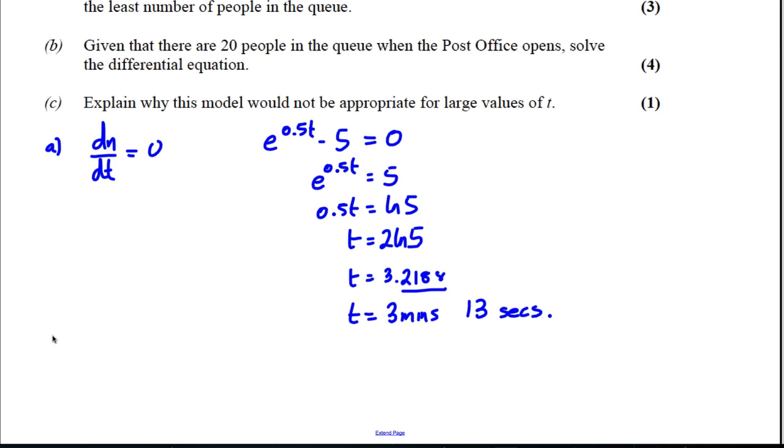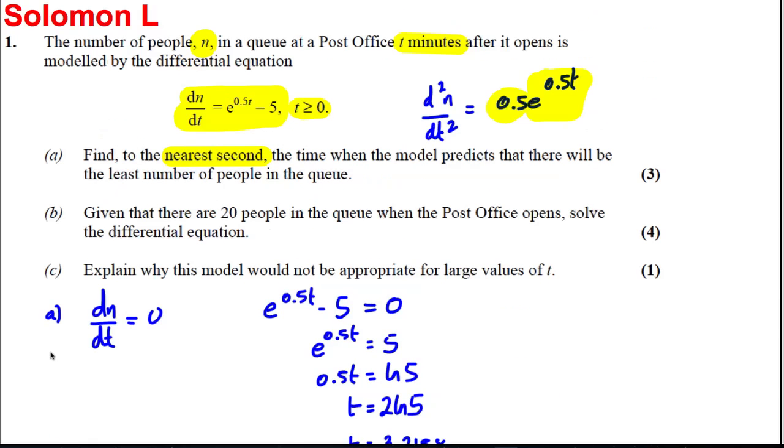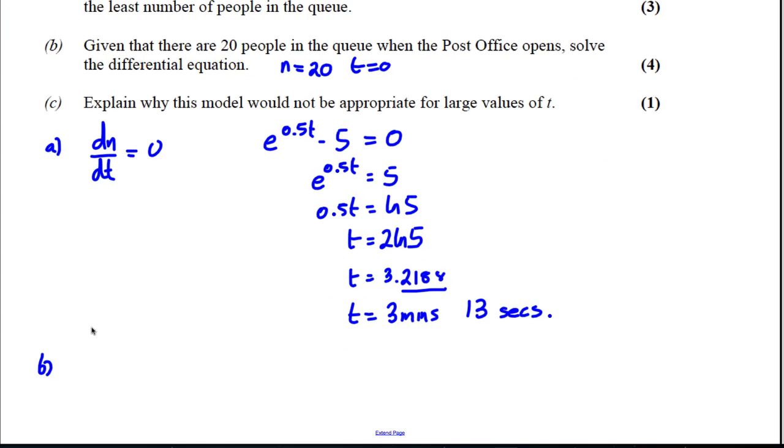Okay, part B. It says given that there are 20 people in the queue when the post office opens, i.e. n equals 20 when t equals 0, solve the differential equation. So our boundary conditions are n is 20 when t equals 0, and our differential equation was dn/dt equals e to the 0.5t minus 5.